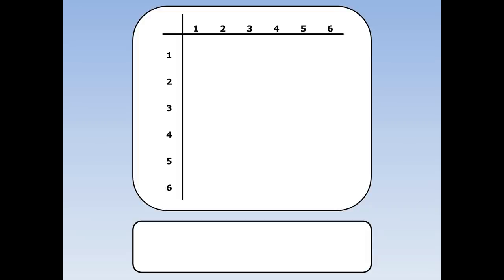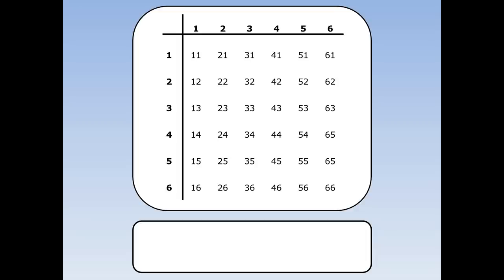What could I get when I throw both of them at the same time? I could get a one and a one, a two and a one, a three and a one, all the way up to a four and a six, a five and a six, and a six and a six. There are 36 things that could happen.